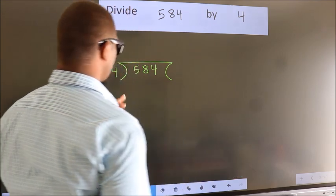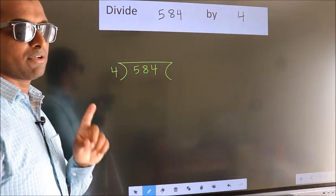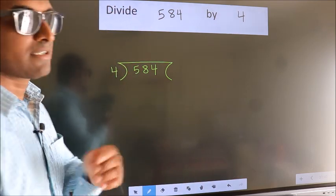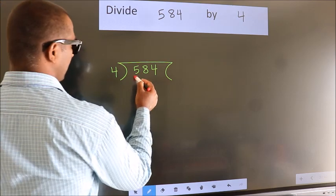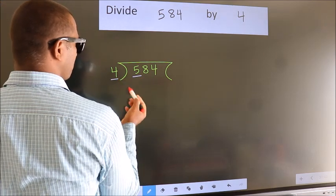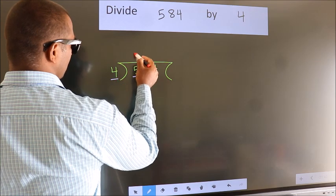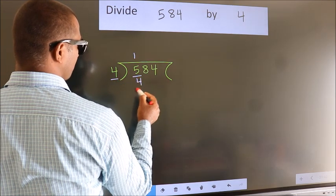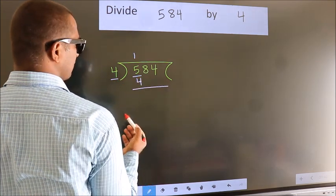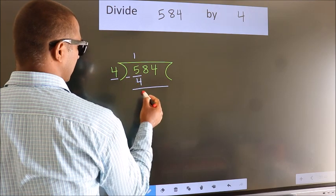This is your step 1. Next, here we have 5, here 4. A number close to 5 in 4 table is 4 ones, 4. Now, we should subtract. We get 1.